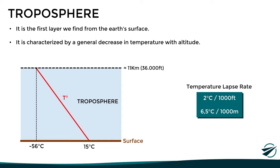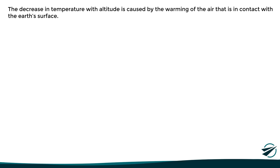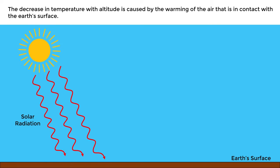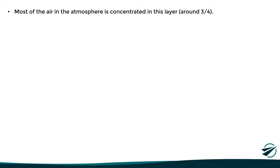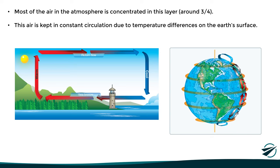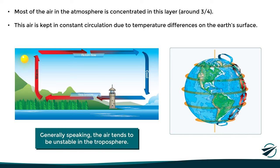You might be wondering why the temperature has this tendency to decrease in the troposphere. In this layer, the decrease in temperature with altitude is caused by the warming of the air that is in contact with the Earth's surface. For example, during the day the surface heats up due to solar radiation, and in turn this hot surface heats the air directly in contact with it, resulting in higher temperatures near the surface and colder temperatures at higher levels. Another characteristic is that most of the air of the entire atmosphere is concentrated in this layer, kept in constant circulation due to temperature differences on the Earth's surface, generating wind and convective currents. So in general, the air tends to be unstable in this layer.